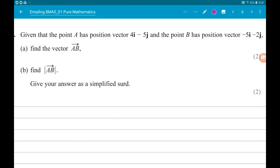Okay, question three involves vectors. Given that point A has position vector 4i minus 5j and point B has position vector minus 5i minus 2j, part a wants us to find the vector AB.